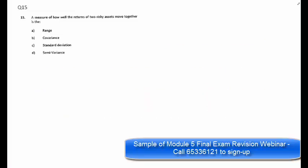Okay, now let's look at question 15. It says here, a measure of how well the returns of two risky assets moving together is the range, covariance, standard deviation, or semi-variance. Now if you understand the definition, you will definitely know that when we talk about the relationship of how two risky assets move together, it is the covariance. So, the answer definitely is B. Now let's look at what are the other options. Range is what you have in statistics. Basically, the largest sample minus away the smallest sample. It is the difference between the largest and the smallest range.